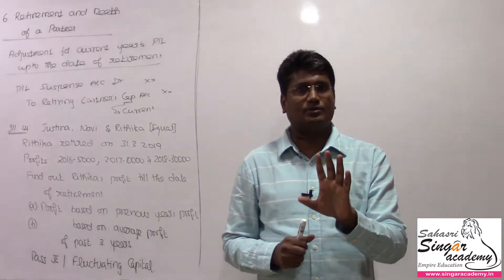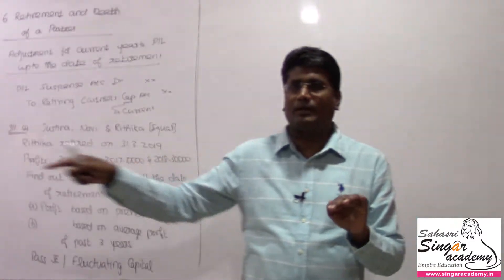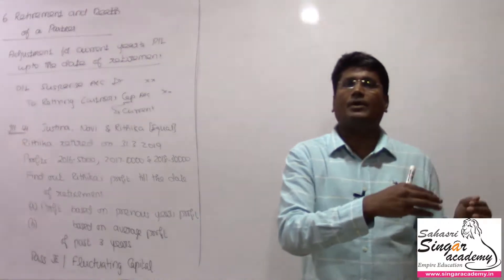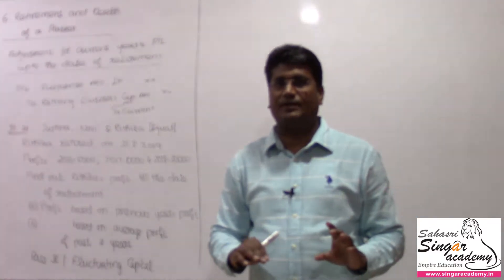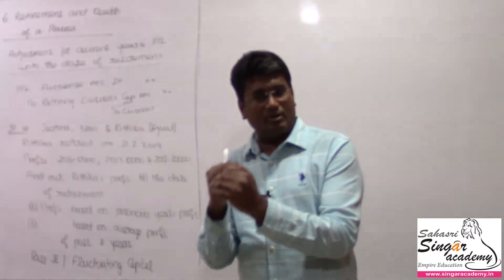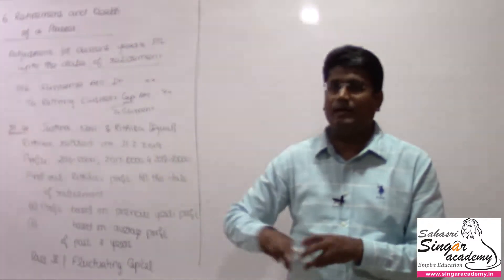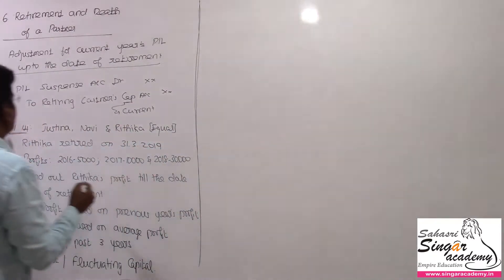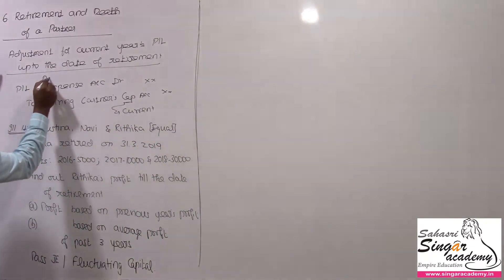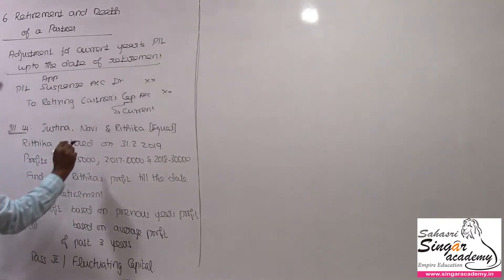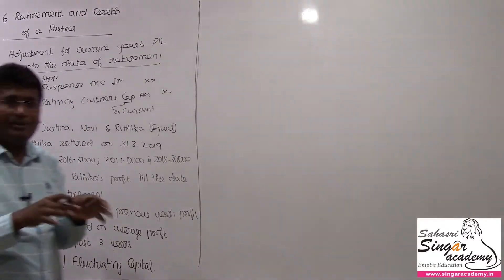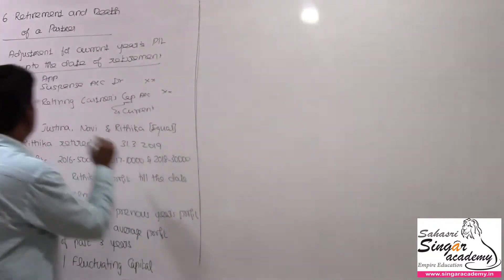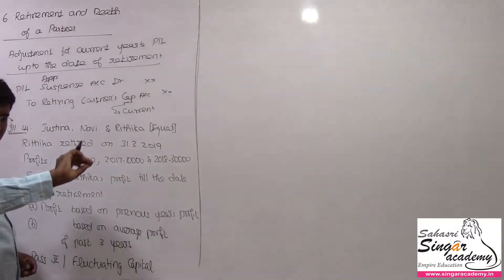For example, if the profit in those months is 5,000, then on retirement we give the retiring partner their share of that profit. If there is a profit, we assume the partner gets a share. Instead of a P&L Appropriation account, we use a P&L Suspense account as a temporary account, and the retiring partner receives their share from the P&L Suspense account.